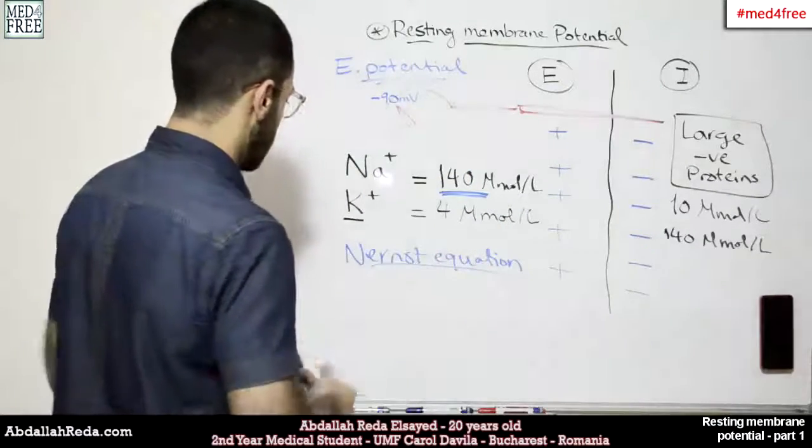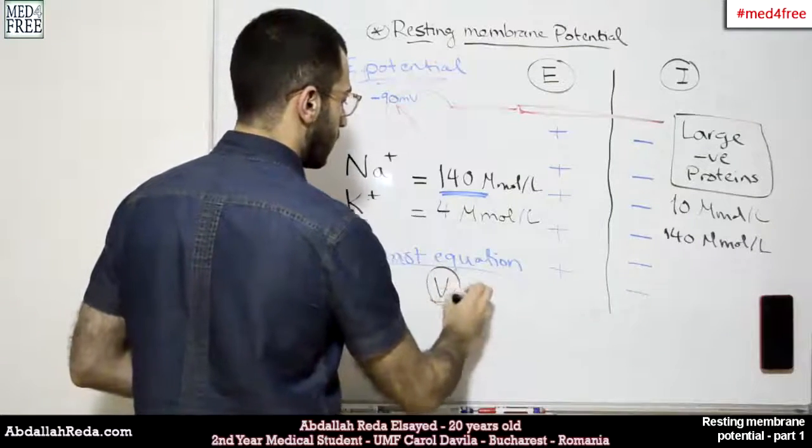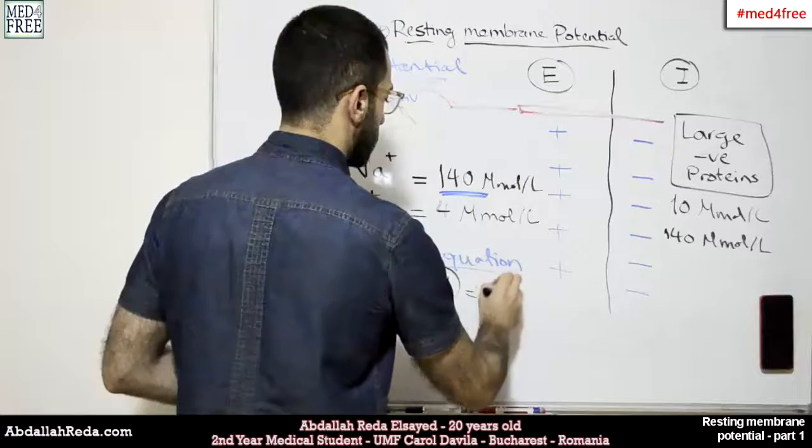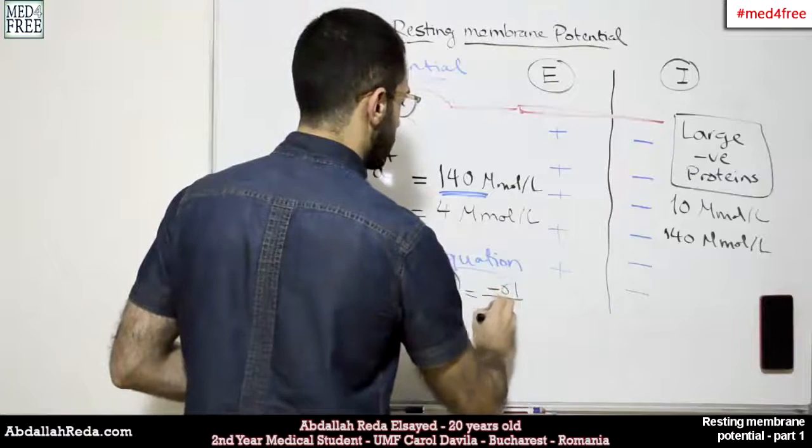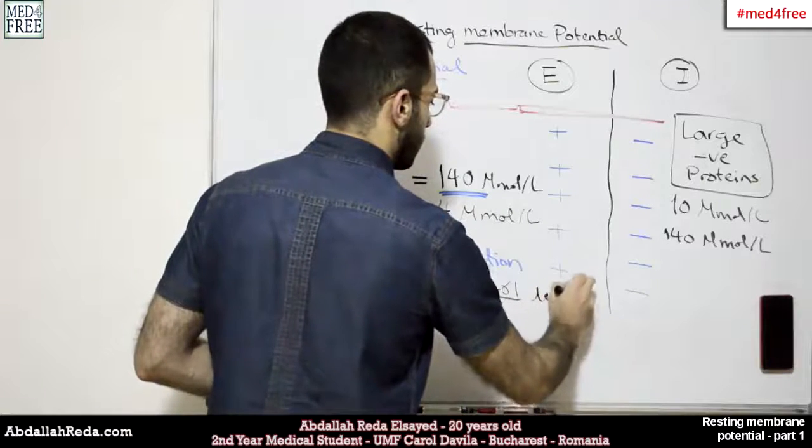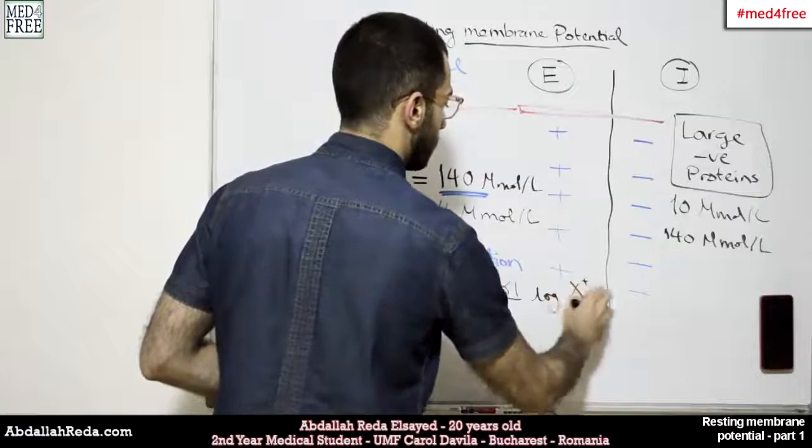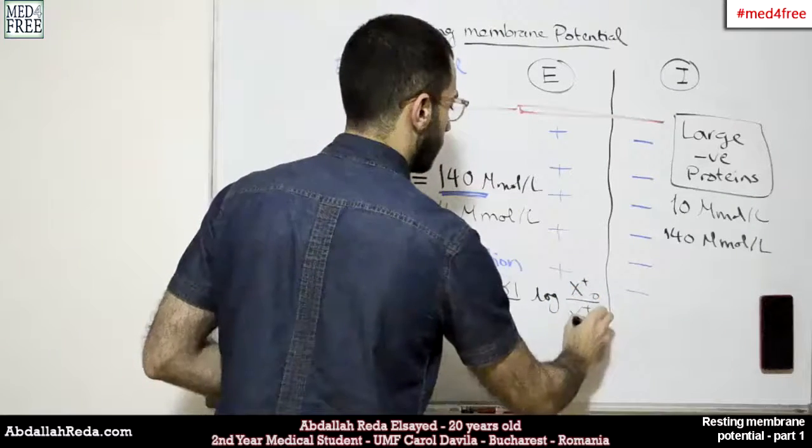And the equation equals, this is the voltage, it equals minus 61 over Z, multiplied by the log of the concentration of the ion on the outside, divided by the concentration of the ion on the inside.